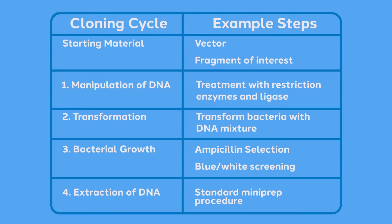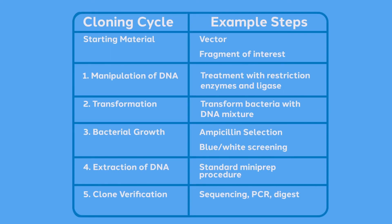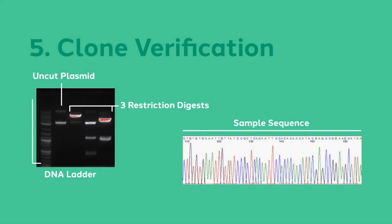Step four: extraction from bacteria. Once candidate clones have been identified, we need to inoculate small bacterial cultures so that we can extract sufficient DNA for analysis. We will extract the DNA using a routine procedure called the DNA mini-prep. There are many DNA mini-prep kits on the market. Once purified, we will analyze the DNA to see if our fragment of interest has been introduced. Step five: clone verification. Now that we have isolated DNA back out of the bacteria, we need to verify which clone or clones are the ones we are after.